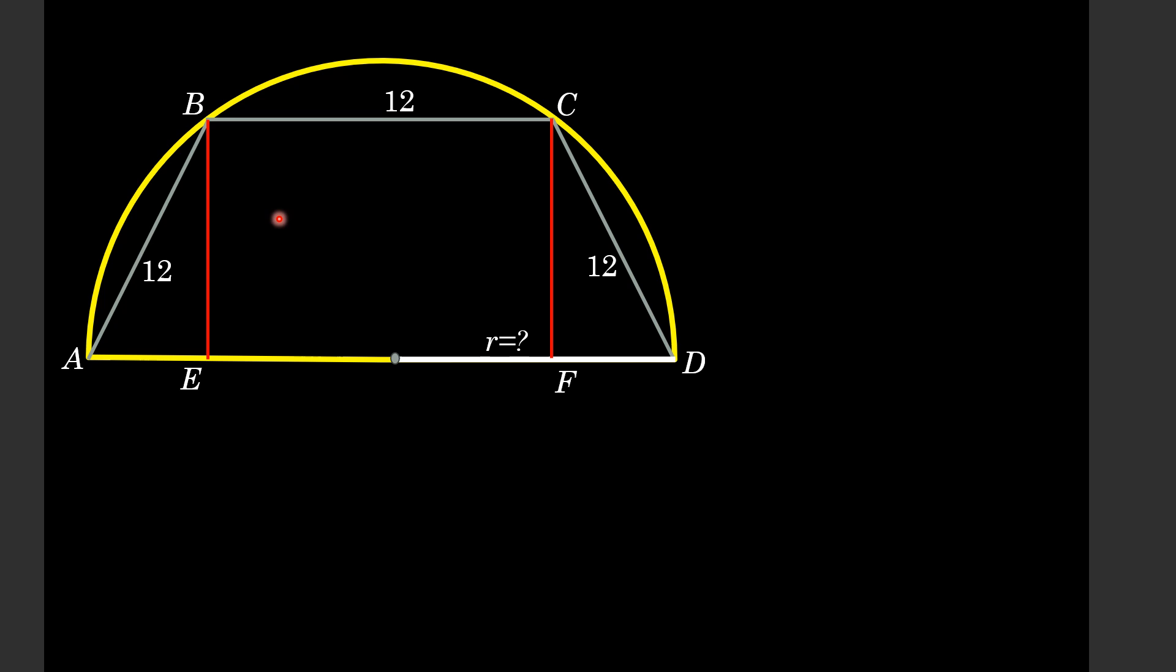From here we can see that EF is equal to BC, that is equal to 12 units, and from the figure BE is also equal to CF. Let we call this length equal to h.